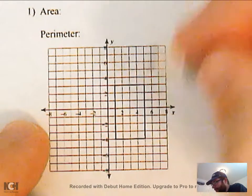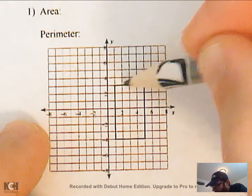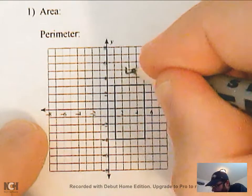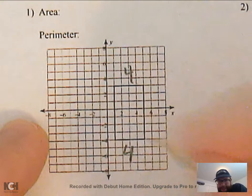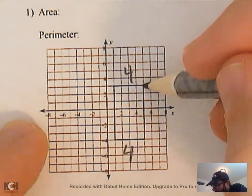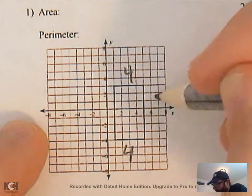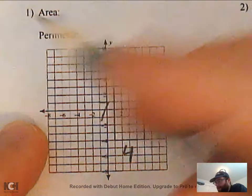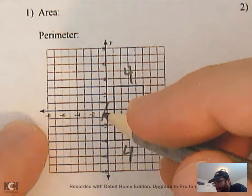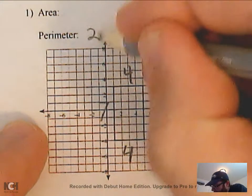To find the perimeter, it's pretty easy — you just count how long the side is. So this side is one, two, three, four. Since it's a rectangle, I know the opposite side is also four. Then this side is one, two, three, four, five, six, seven. Which means that side is seven. So to get the perimeter, I just add them all together: seven plus four is 11, and 11 plus 11 is 22. So perimeter is 22.